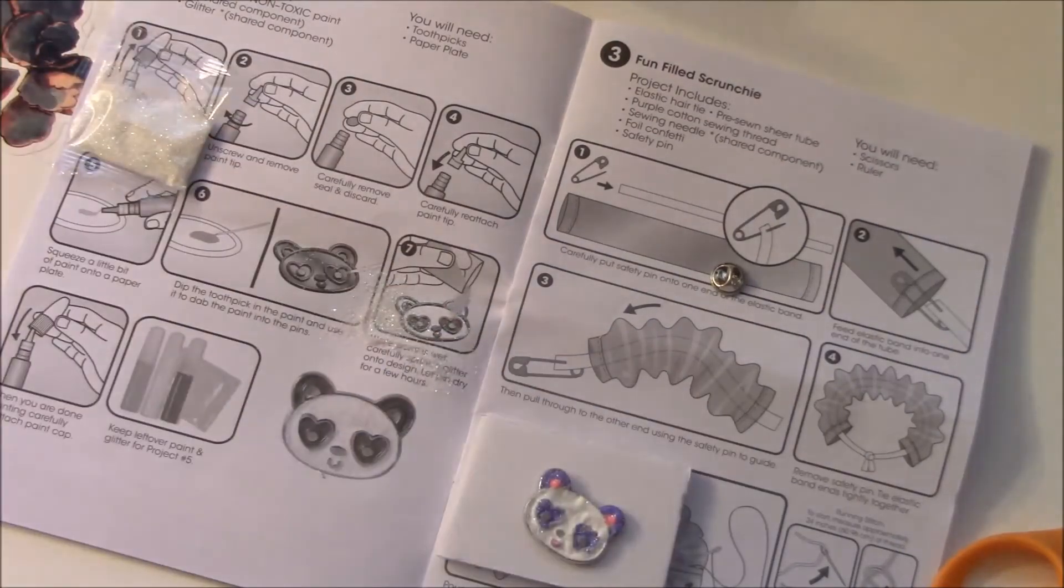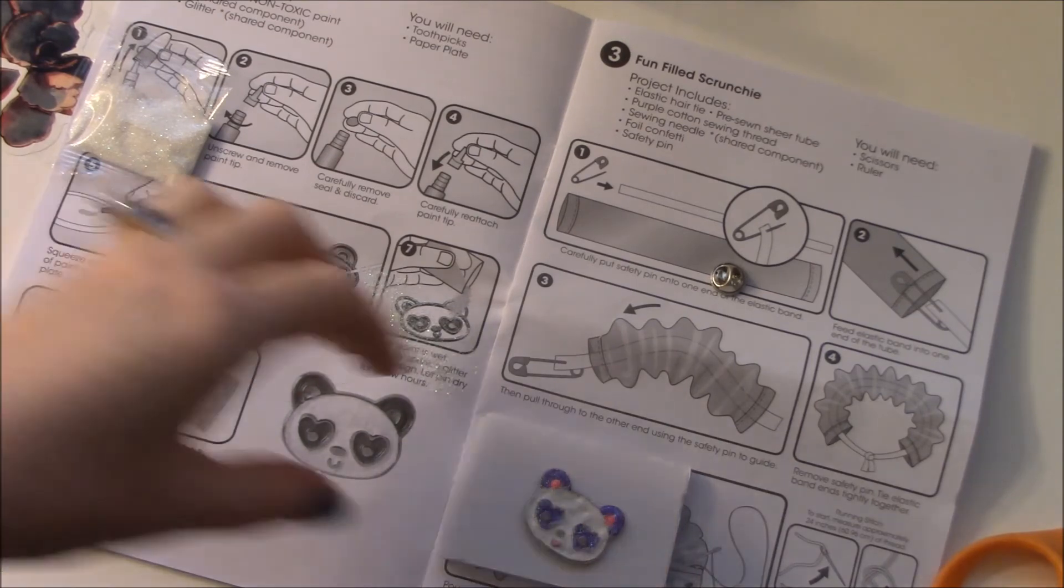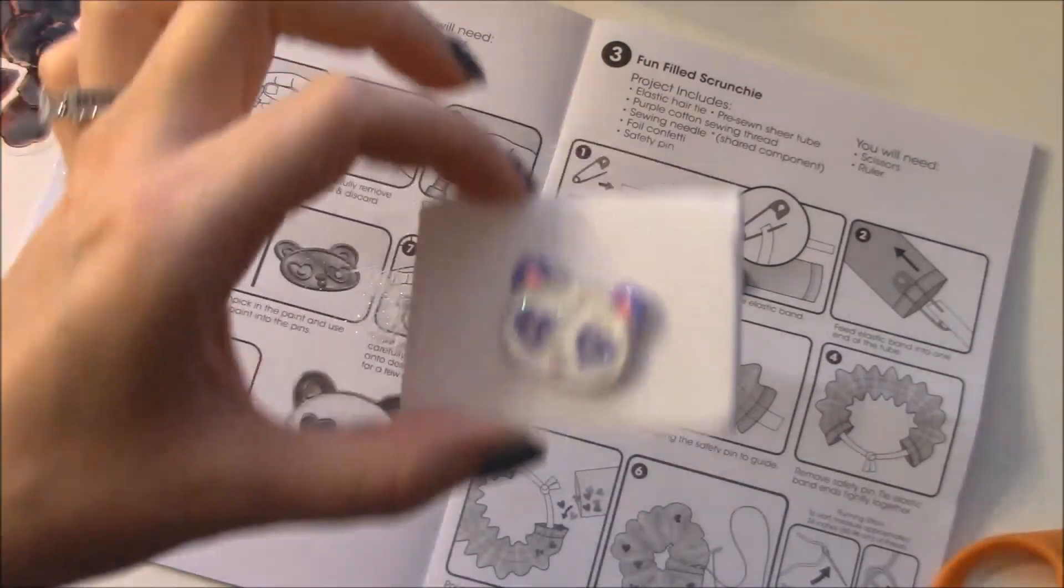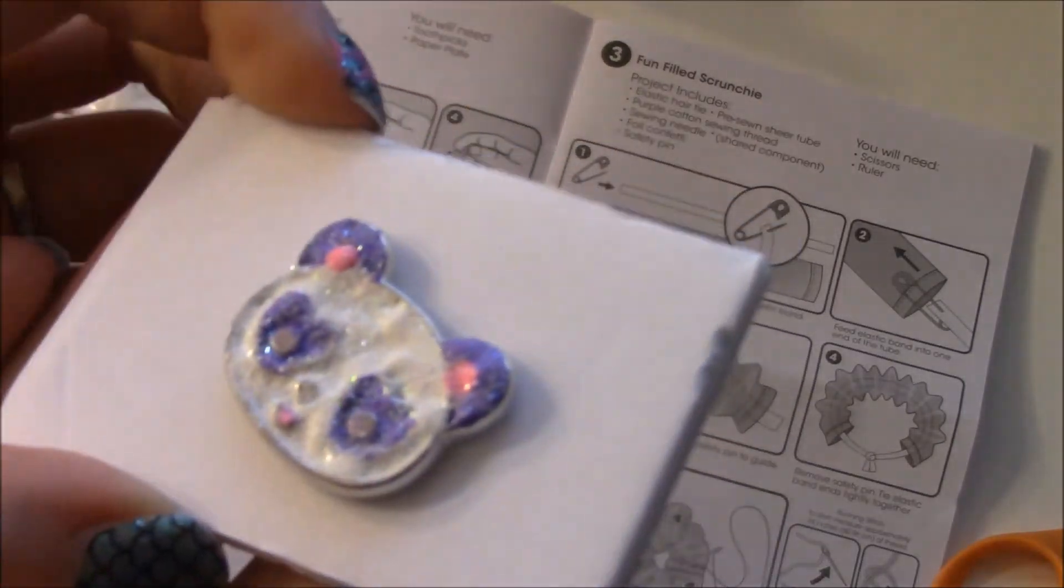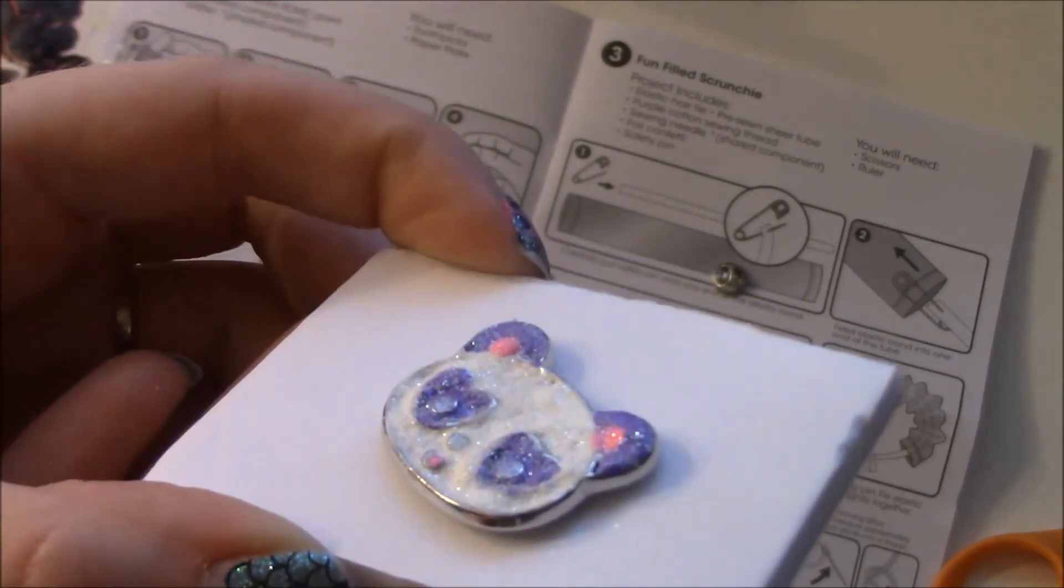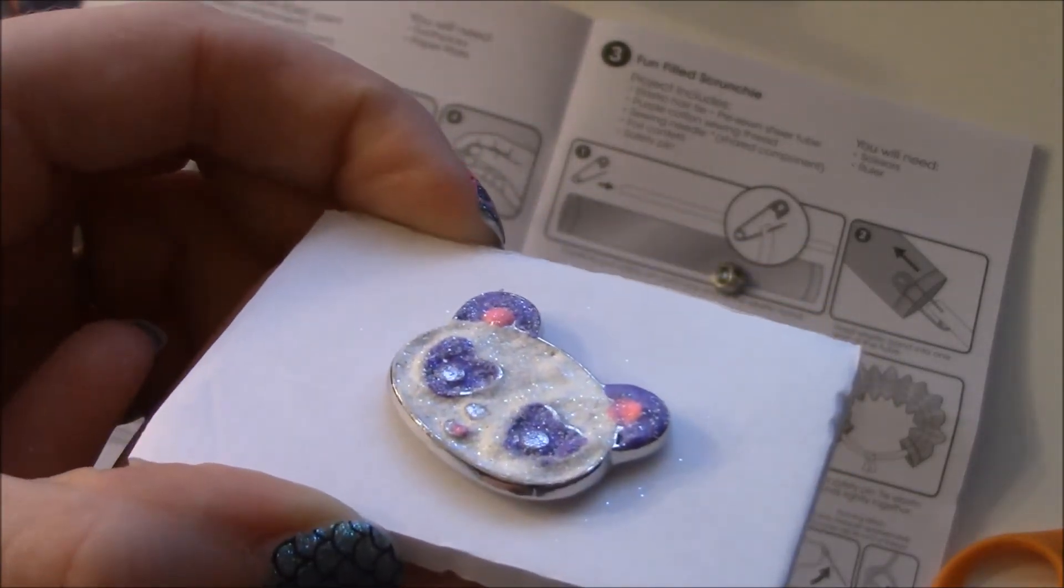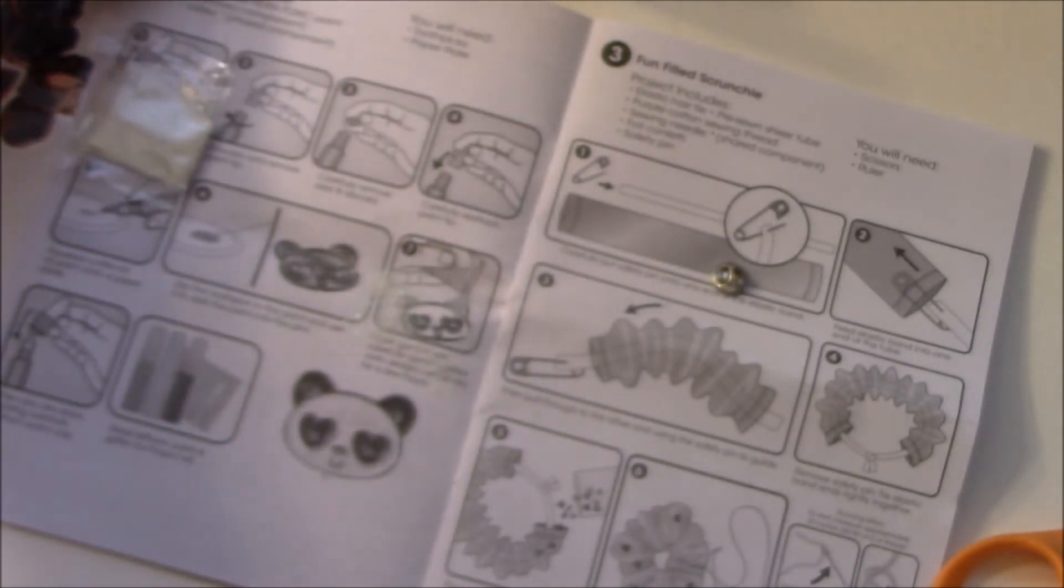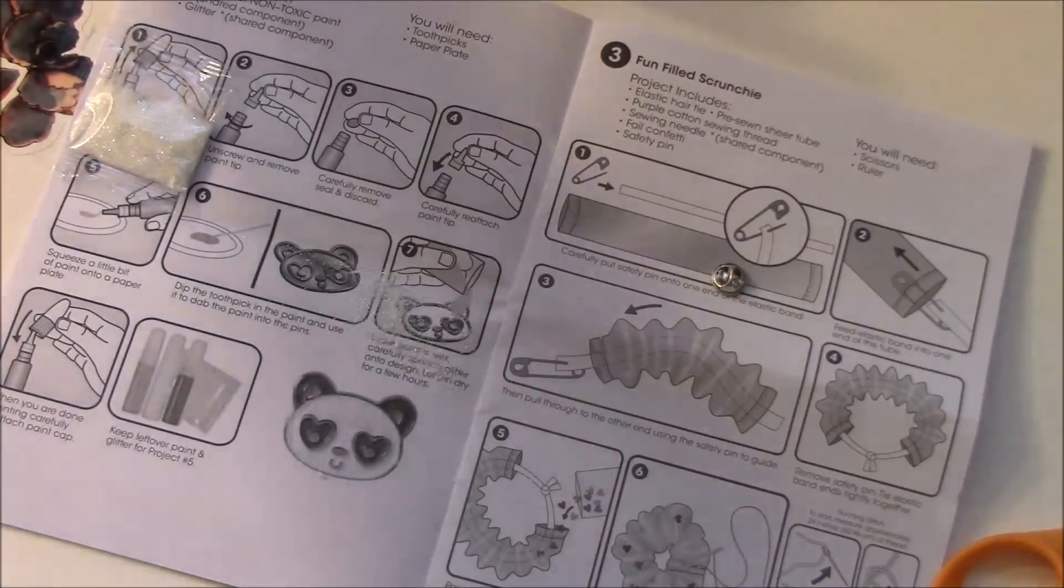But that's what we got. She's looking a bit crazy. It says let it dry for a few hours, so I'm gonna go ahead and let this dry. That was day two - the paint and wear enamel pin. Tomorrow we'll check out how it looks whenever we do our fun filled scrunchie. This was kind of fun. I think using a toothpick like they said would have probably been a better idea because I got some globby paint in there.